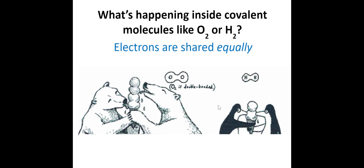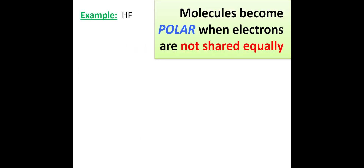What we mean by polarity is an unequal sharing of electrons where one side gets the electrons more than the other, and that's going to cause a negative side and a positive side - just like the poles of a magnet, you have a positive side and a negative side. That's where the notion of polarity comes from. The electrons in these two molecules are shared equally because the two atoms are the same and have the same electronegativity.